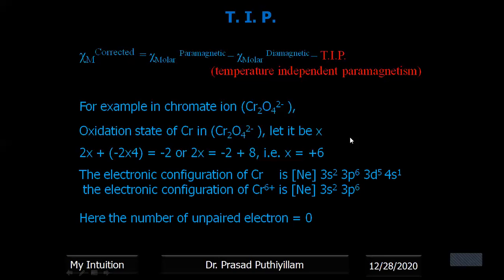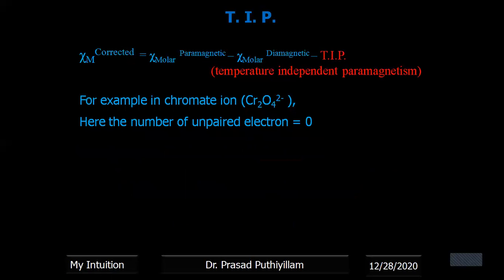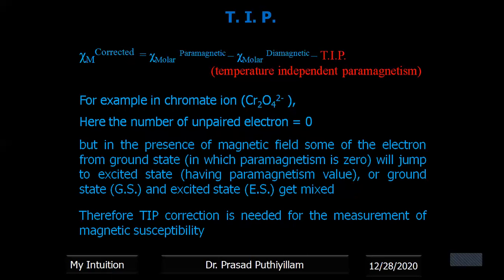I'm expanding it - usually you can write argon 3d⁵4s¹. So I'll take it as neon 3s²3p⁶3d⁵4s¹, because we need to write the oxidation state of Cr⁶⁺. Therefore it becomes [Ne]3s²3p⁶. That means here there are no unpaired electrons, all electrons are paired in s orbital (2) and in p is (6). That means there are no unpaired electron count, or its number you can say is zero.